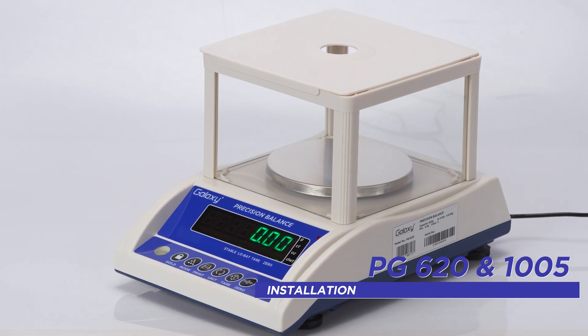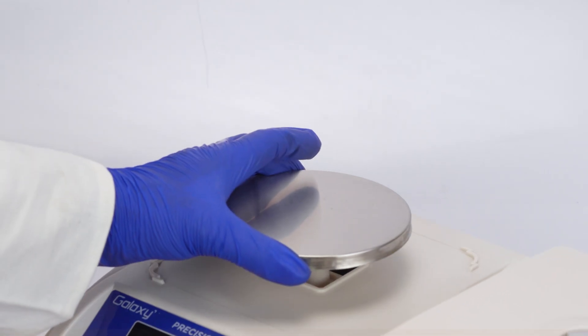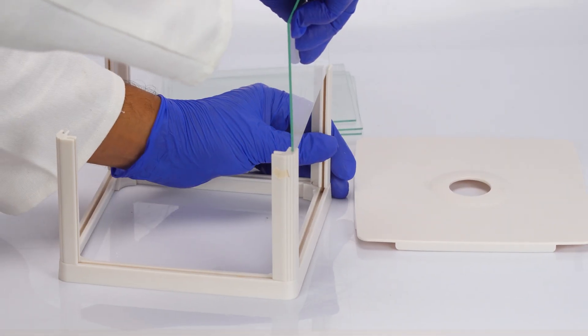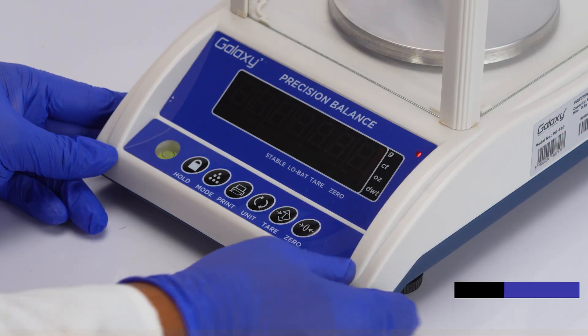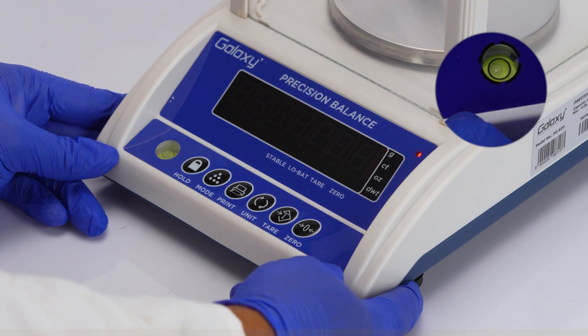Set the main unit on a flat stable surface. Securely attach the weighing pan and assemble the windshield. Check if the balance is level and adjust the feet so that the air bubble is centered inside the black ring.